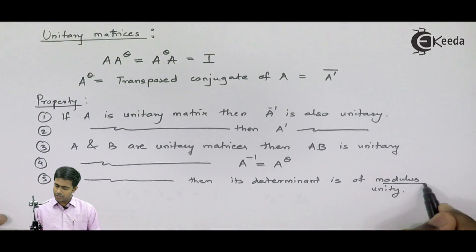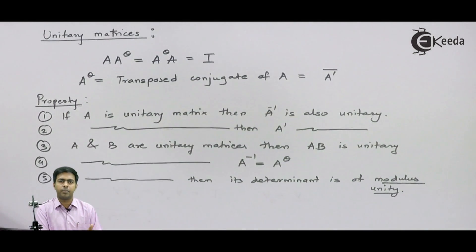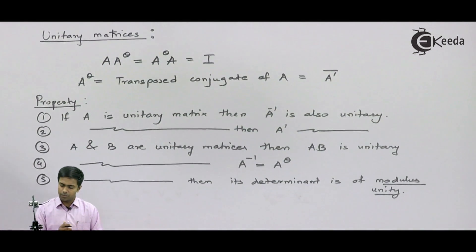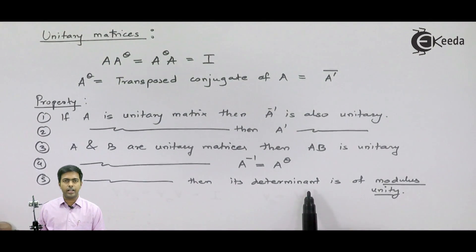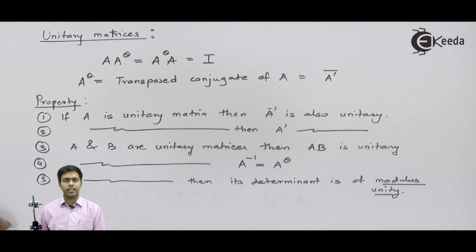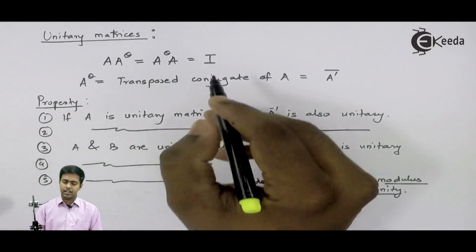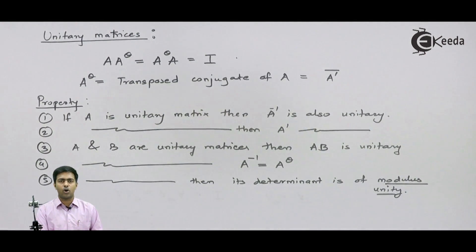Modulus unity means the modulus of the determinant value is equal to one. So the determinant of a unitary matrix, after finding its modulus, will always be one. Using these properties and the condition of unitary matrices, we can solve many problems based on unitary matrices.